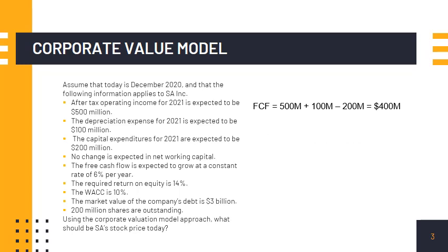We get the market value of the firm as follows: free cash flow of $400 million divided by WACC of 10 percent minus constant growth rate of 6 percent, equals $10 billion dollars. Take note that in discounting we use WACC and not the required rate of return on equity, since the free cash flows pertain to the entire firm and not just common stock.